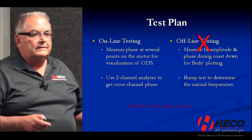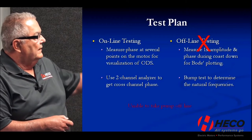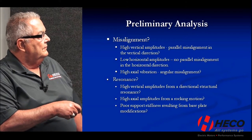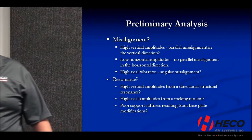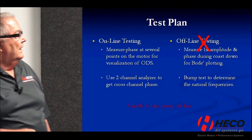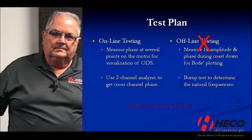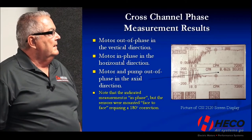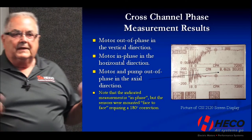The question was what did the horizontal look like relative to the vertical. The high ones were the vertical and the axial; the horizontal was low. Offline testing — like a bump test to check for resonance — was not something the customer was happy about doing first.